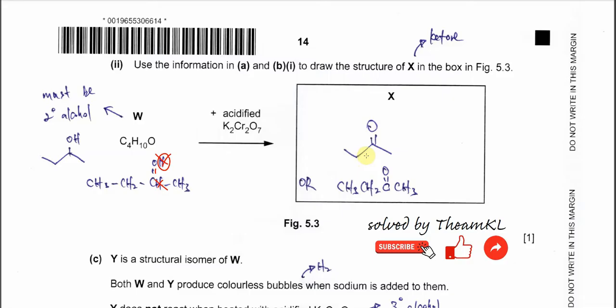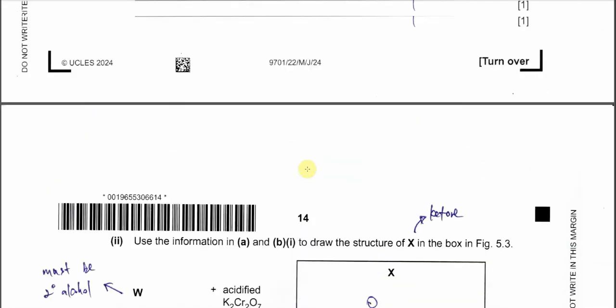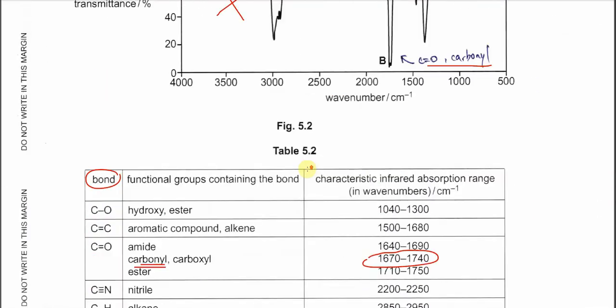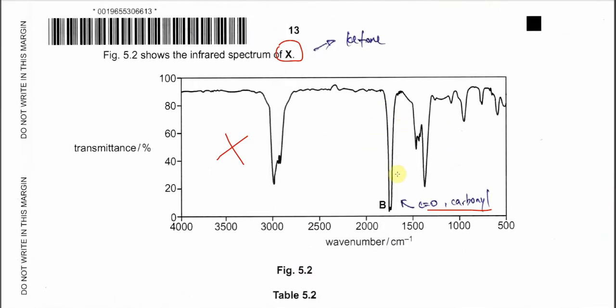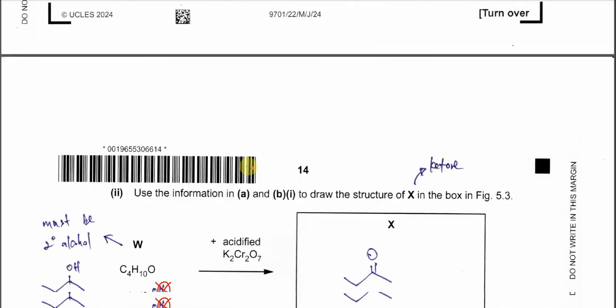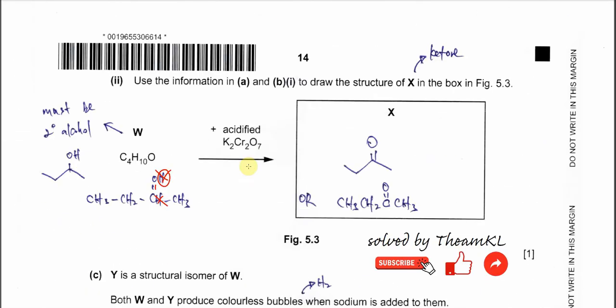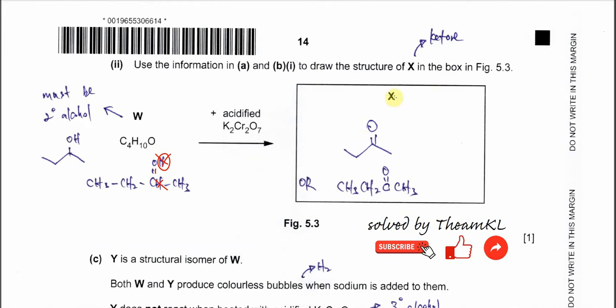I hope you understand what I say. Why it cannot be primary alcohol, why it must be secondary. Because in X, it only shows the carbonyl without the broad absorption here. It's not a carboxylic acid, it's a ketone. Therefore, now X has only one answer. You can give the skeleton or you can give this structure.